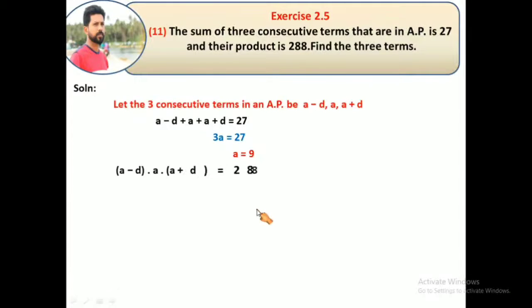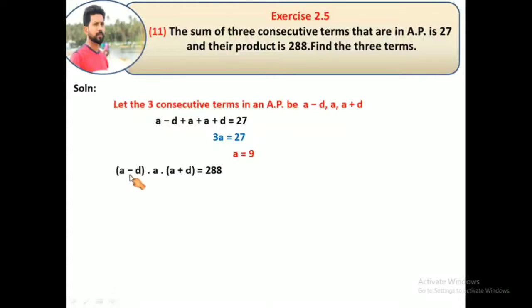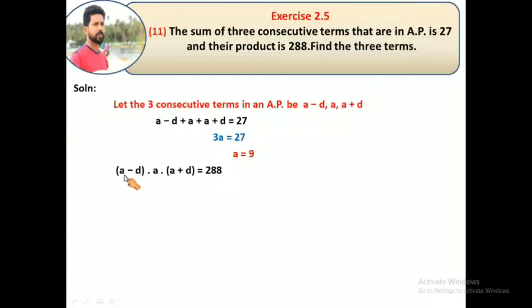The product of the three numbers equals 288. So (a-d) × a × (a+d) = 288. Using the algebraic identity (a+b)(a-b) = a² - b², we get (a+d)(a-d) = a² - d². Therefore, a(a² - d²) = 288.